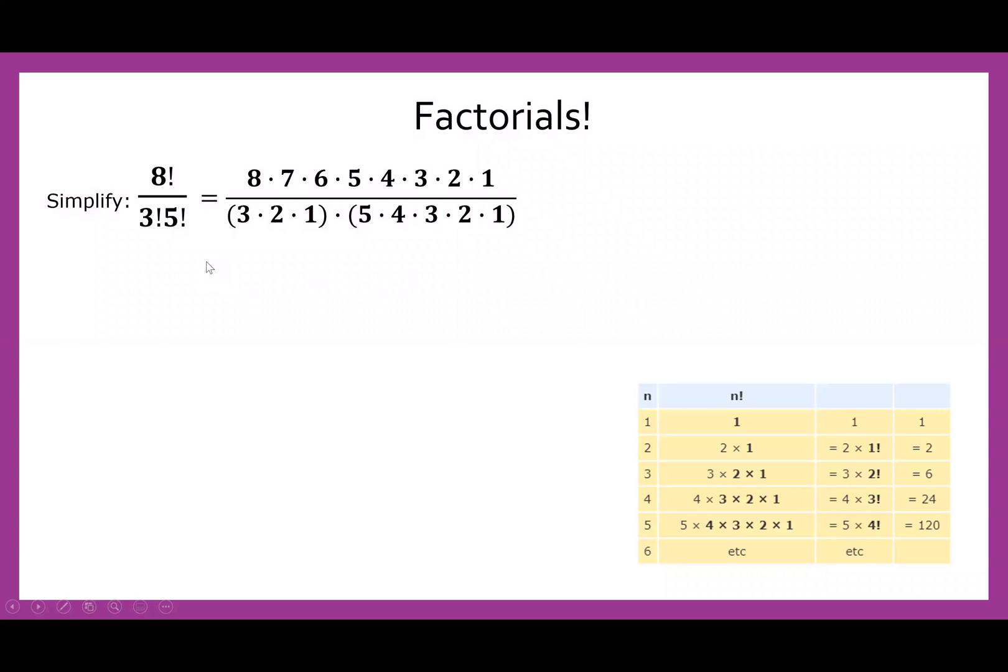So in the numerator, eight down to one. And then in the denominator, we have three factorial. So that gives us three times two times one. And then we also have five factorial. So that's five by four by three by two by one. And we still have a lot of great cancellations. So notice the five factorial from the denominator and part of the eight factorial in the numerator have cancellation in red. So what we would be left with here is just eight times seven times six over three times two times one.